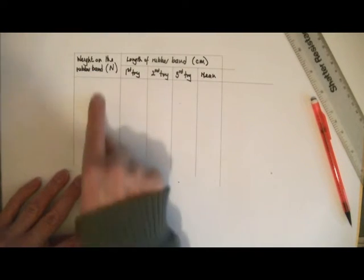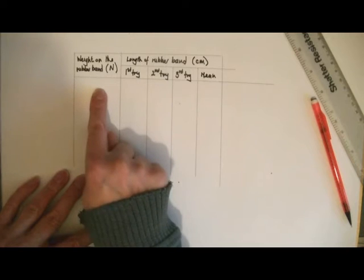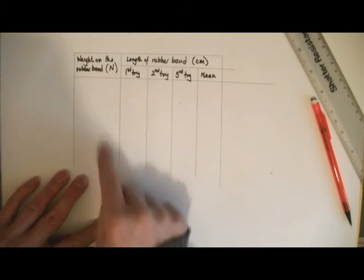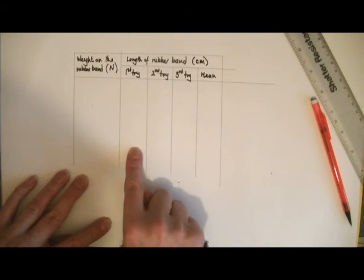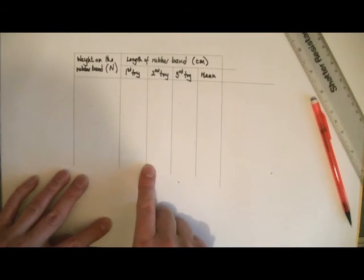I know that everything I write in here is measured in newtons. So, I don't need to write n next to the numbers there. I know everything measured in here is in centimetres. So, I don't need to put centimetres next to it.